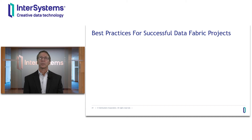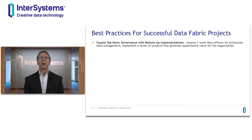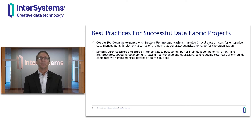I wanted to briefly share best practices from implementing many of these projects with our customers. First, think about coupling top-down governance with bottom-up implementations: involve the C-suite and the Office of the Chief Data Officer for top-down governance and structure, but look for bottom-up projects that add quantitative value to the organization in relatively short sprints. Second, simplify architectures and speed time to value. There can be many different data management services required in building an enterprise data fabric, so the more you can reduce the number of individual components — certainly with a product like InterSystems IRIS Data Platform — the more you can simplify architectures, speed development, and simplify ongoing maintenance.